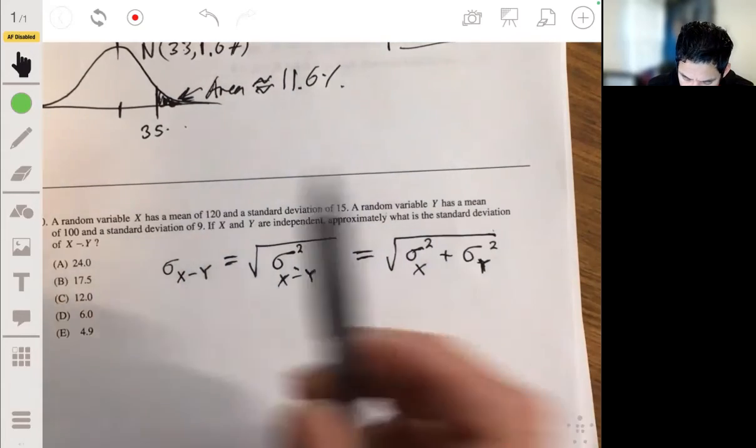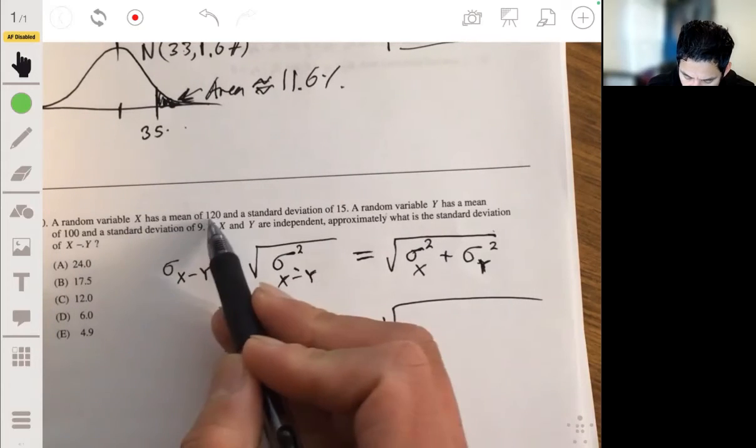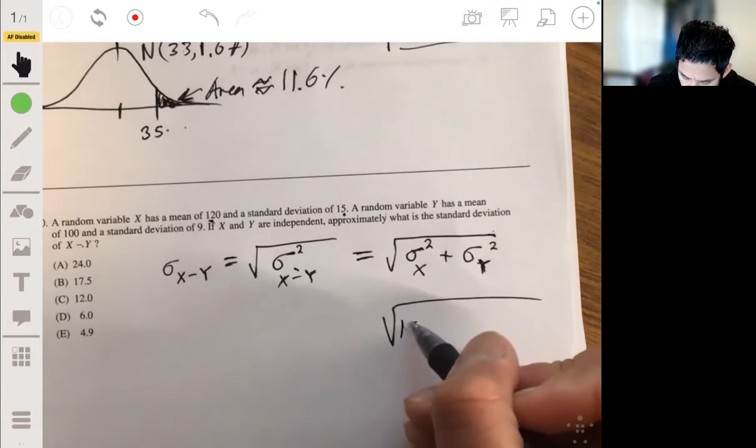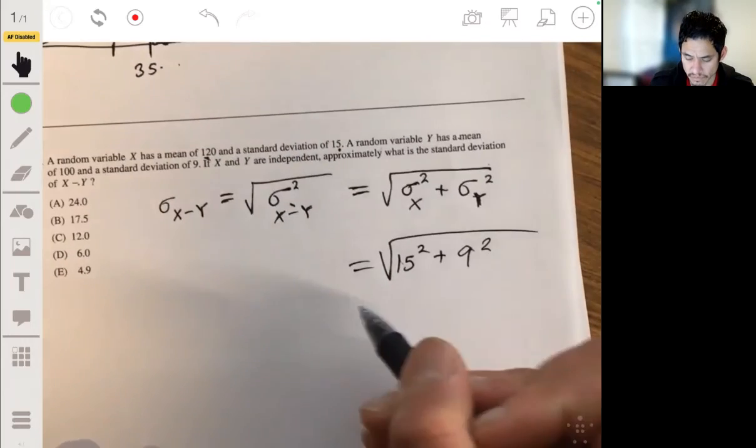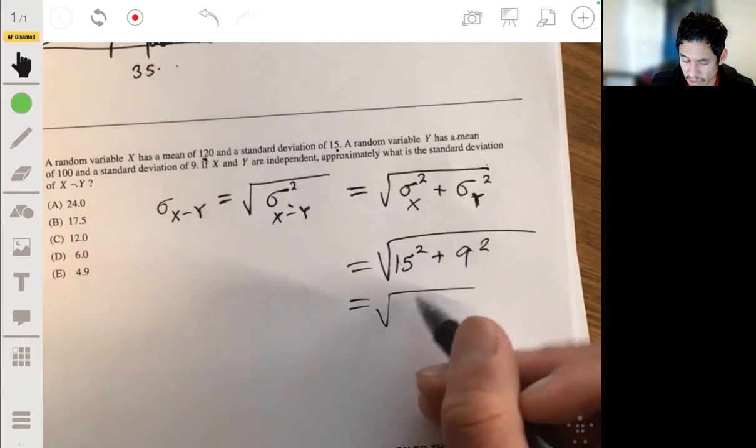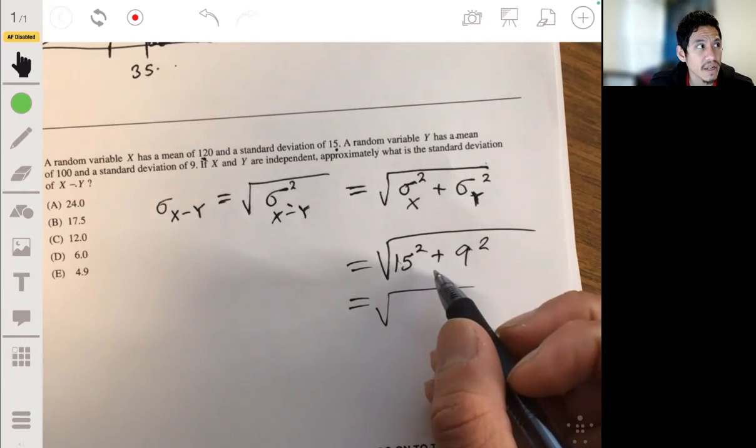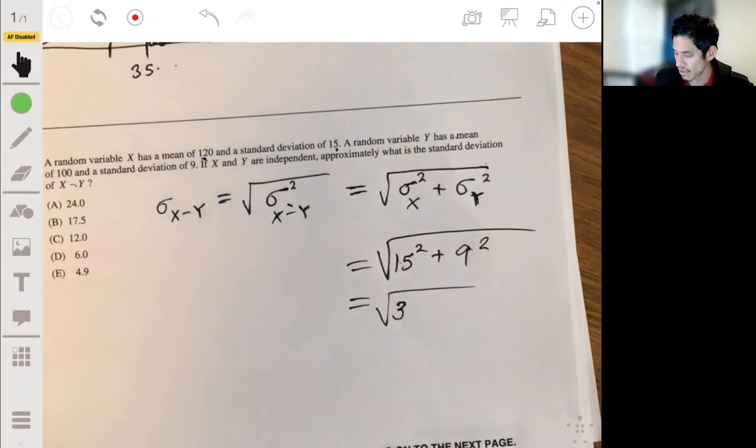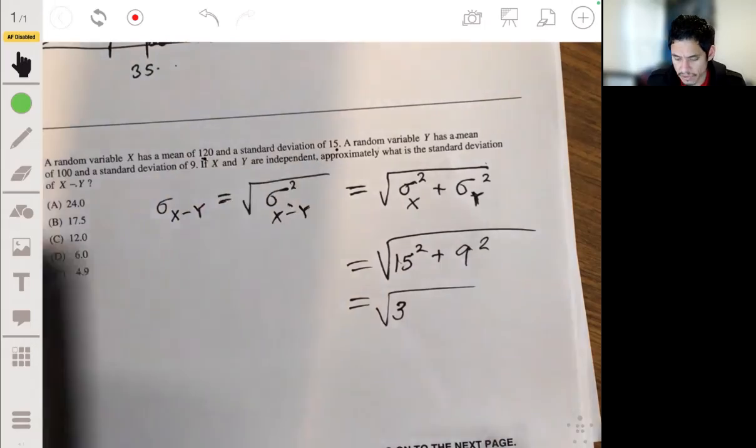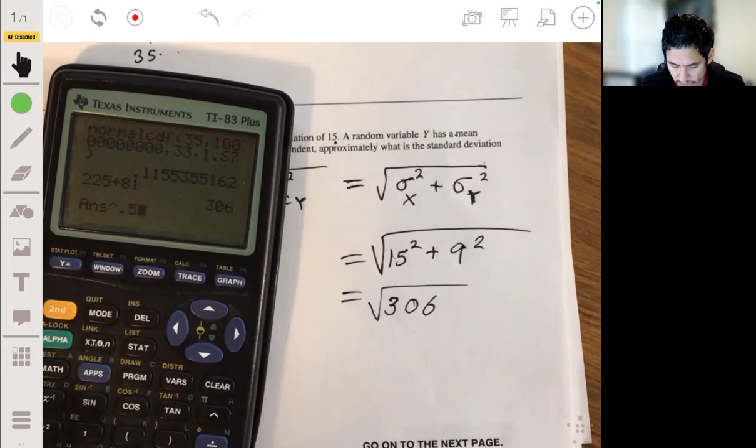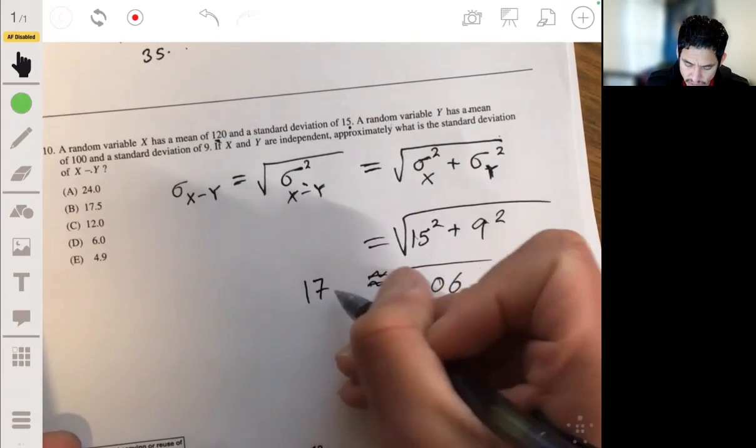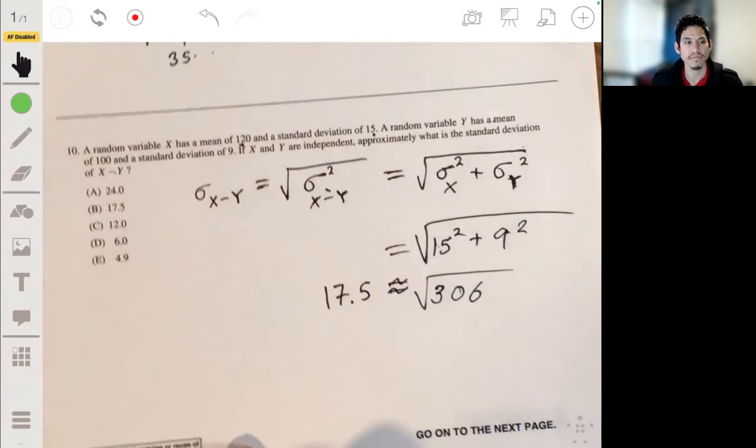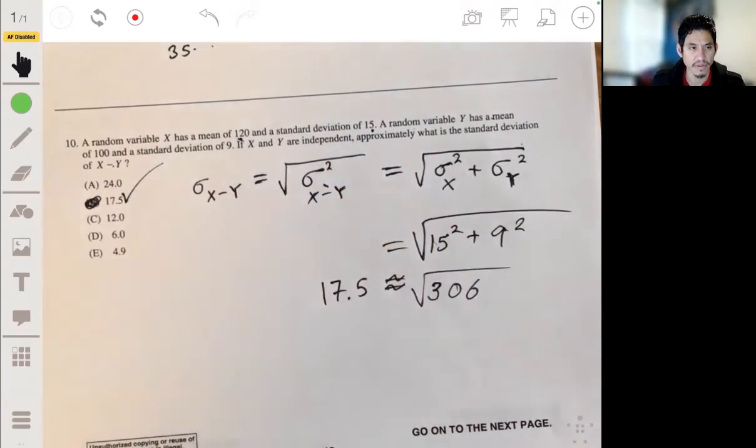So from here, all we have to do is then find the square root of 15 squared plus 9 squared. So 225 plus 81. And then find that square root, and it's about 17.5. And the answer would be B.